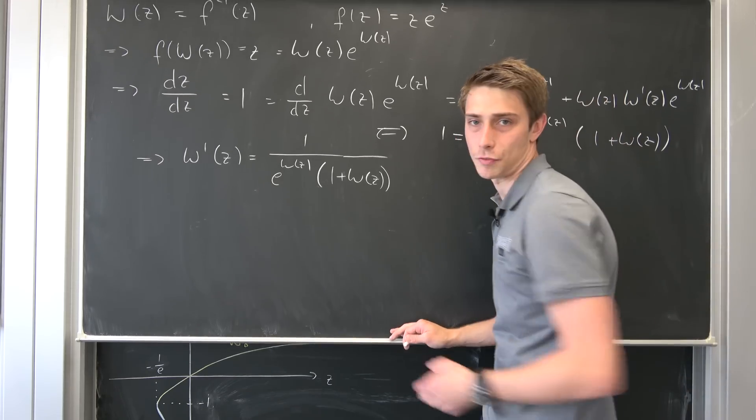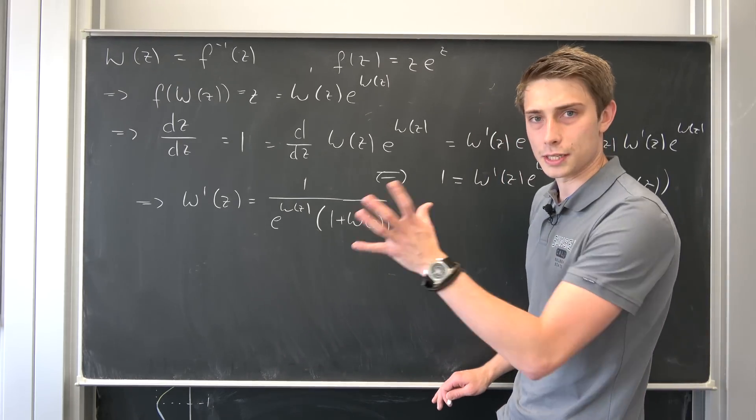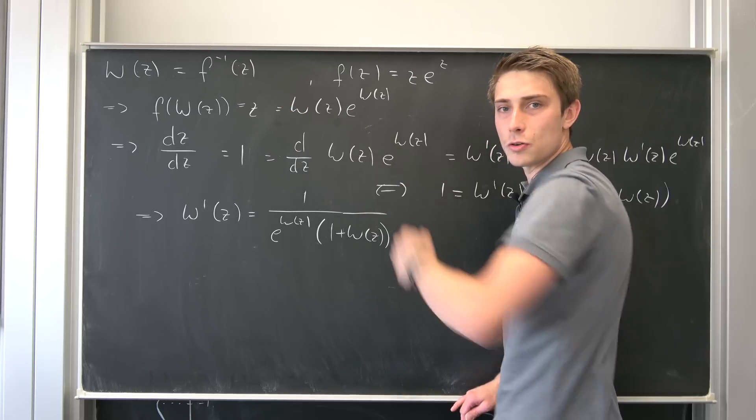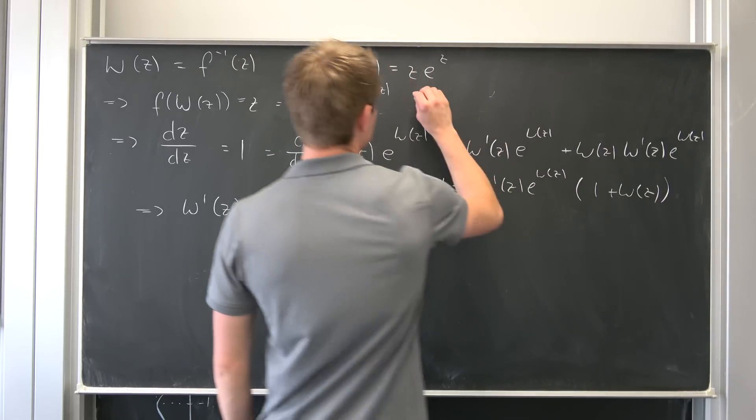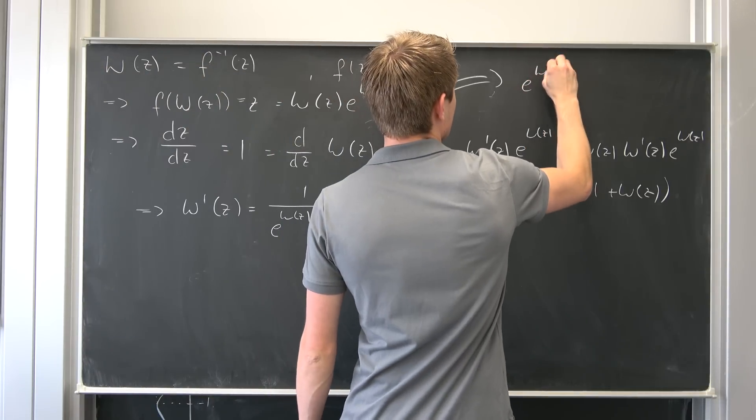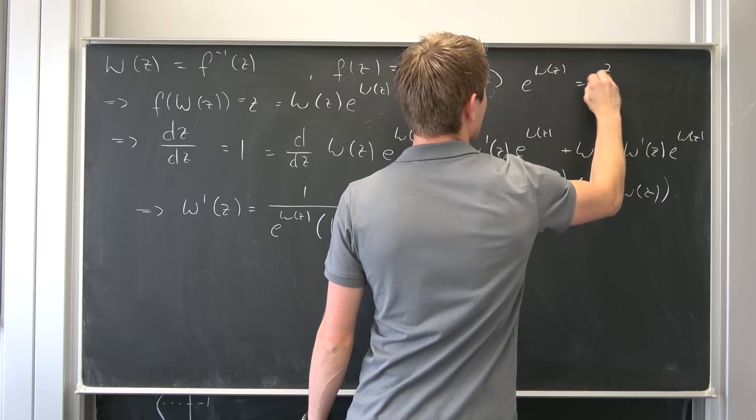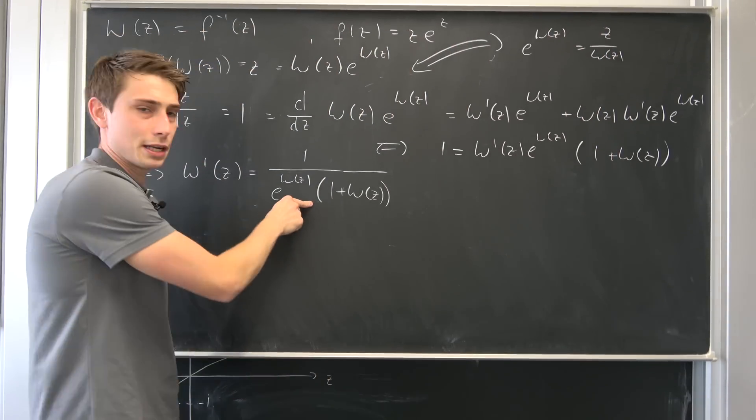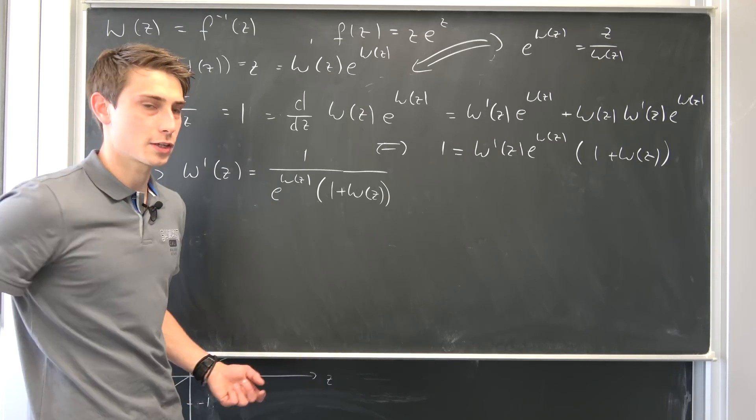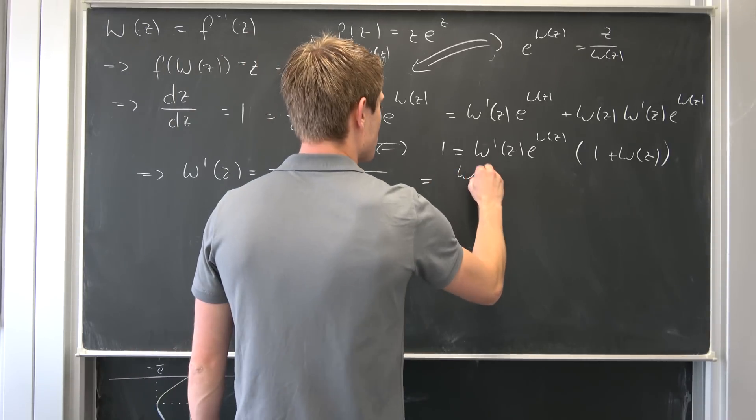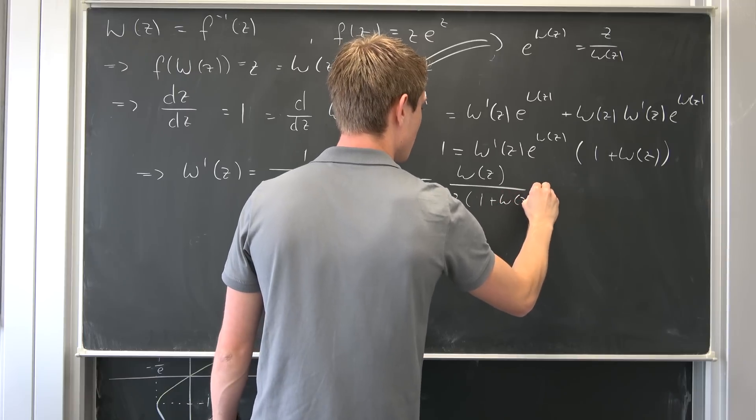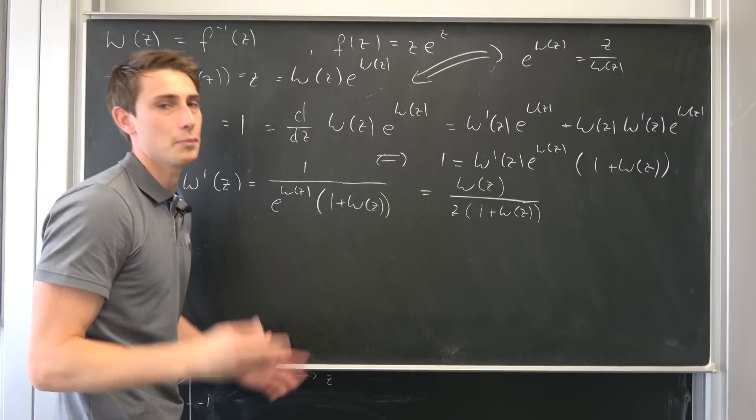But we still have this exponential function here. If you want to get rid of it to see where this derivative exists a bit better, we can just solve for e to the Lambert of z up here. So we can divide both sides by Lambert of z, and e to the Lambert of z is nothing but z over Lambert of z. If you plug this in, you end up with a complex fraction, but you can just take the reciprocal. So finally, we're going to end up with Lambert of z over z times 1 plus Lambert of z being the derivative of the Lambert W function.